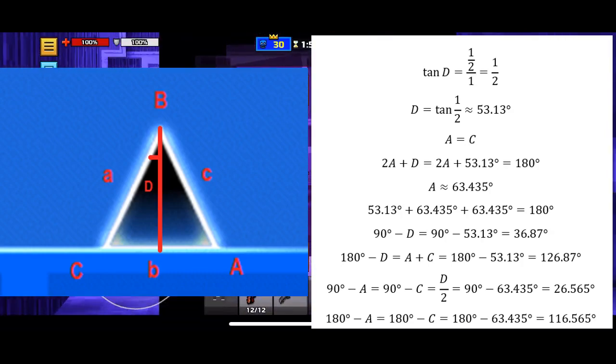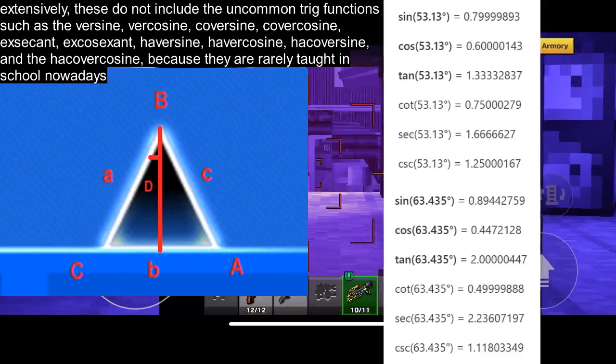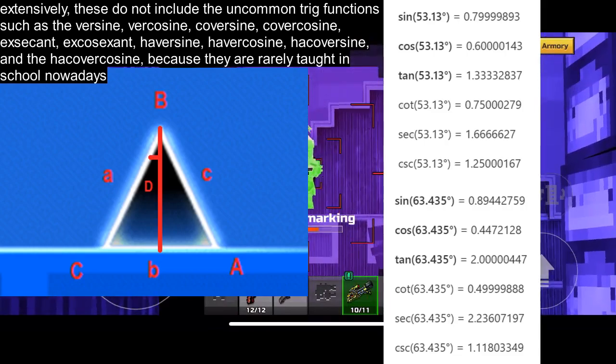The complement of each of the base angles is 26.565 degrees which is half of the apex angle and the supplement is 116.565 degrees. Here are the approximate trigonometric values for the interior angles.